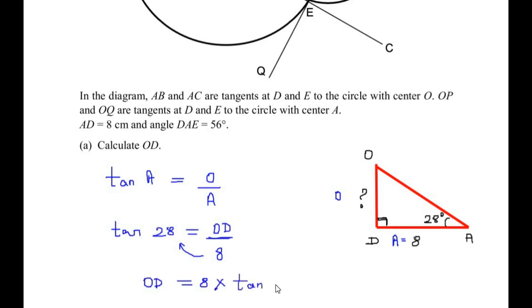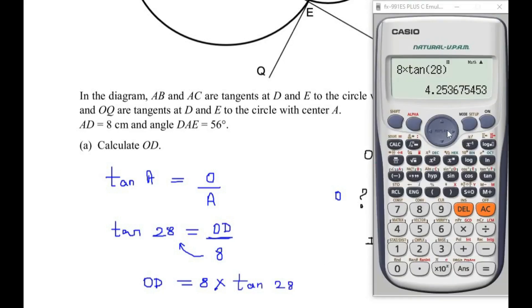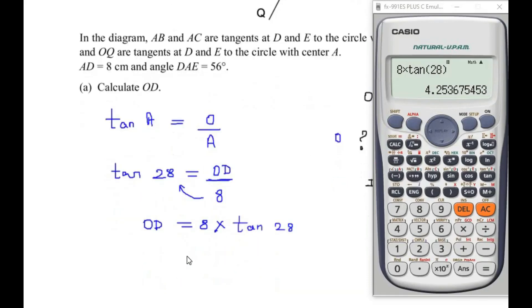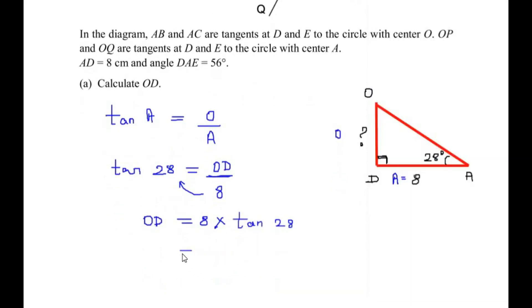Cross-multiplying, we get OD = 8 × tan(28°). This gives a value of 4.2536, which we round to 4.25. So the side OD is 4.25 centimeters.